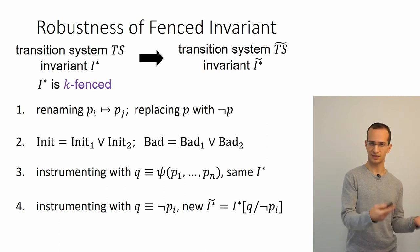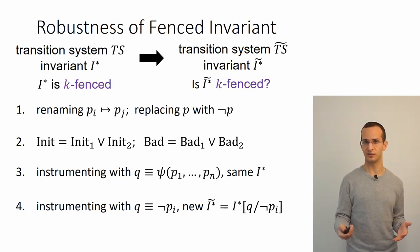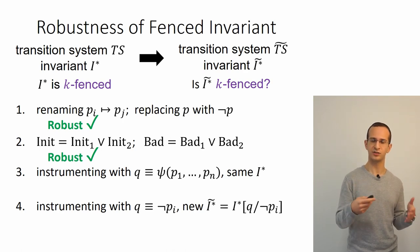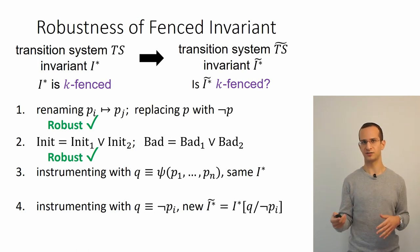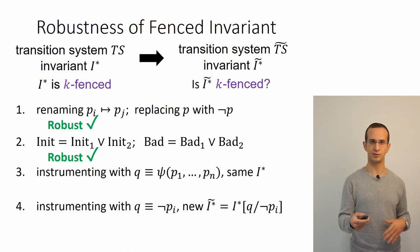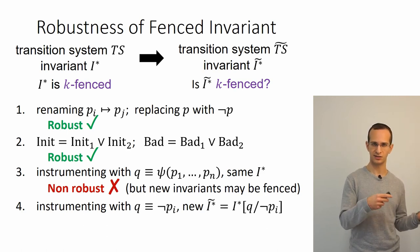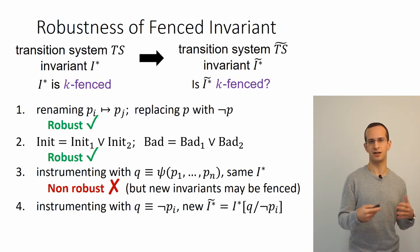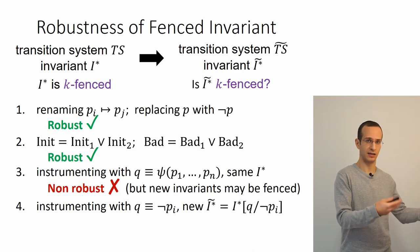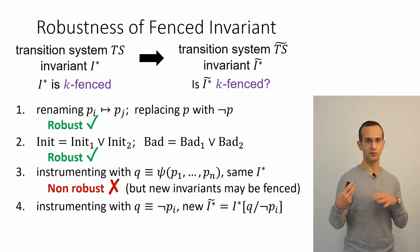Suppose the original invariant satisfied the fence condition—does the new invariant also satisfy it? We can show that for the first two transformations (renaming/flipping variables and combining initial or bad states), the fence condition is robust: if the invariant was fenced before the transformation, it's also fenced after. However, for the other two, it's not the case. Once we introduce a new variable capturing some relation over existing variables, the old invariant is no longer k-fenced, and the algorithm can't provably converge to it, although there may be a new invariant using the new variable that would be k-fenced.